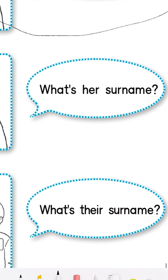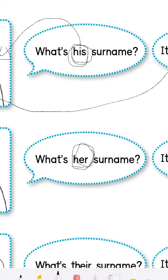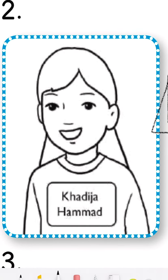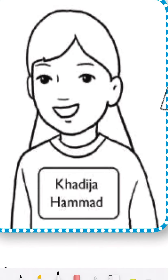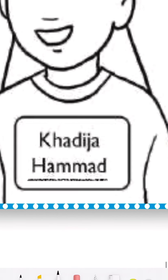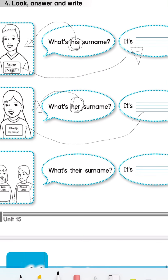Number two. Look. What's her surname? We have a girl. Because she's a girl, we ask about her with her. What's her surname? For the boy, his. For the girl, her. Let's read it and spell it. Khadija Hammad: H-A-M-M-A-D. Hammad in Arabic. So you have to write her surname here, because it's a girl.